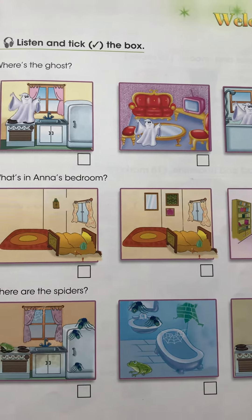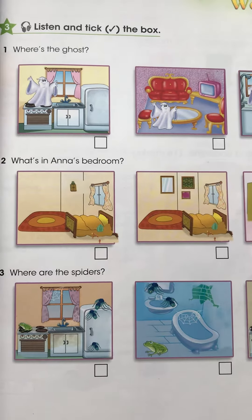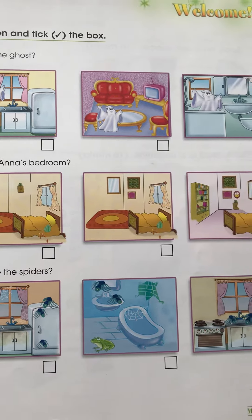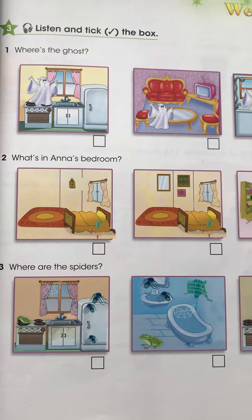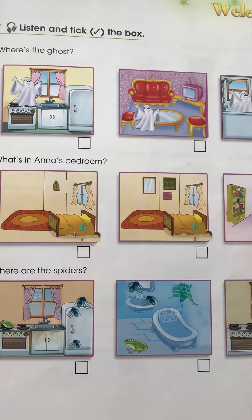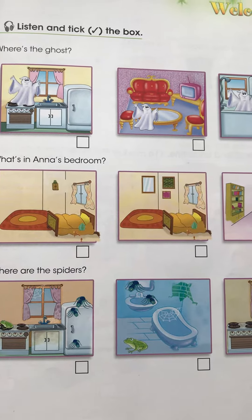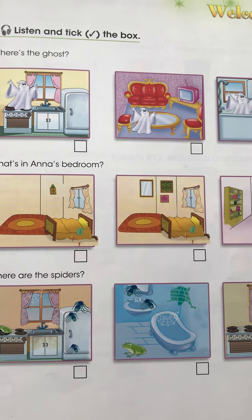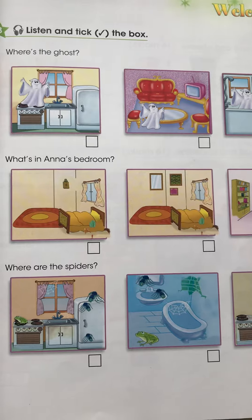Number two. What's in Anna's bedroom? Is there a carpet in your bedroom, Anna? Yes, there is. And are there pictures on the wall? No, there aren't.